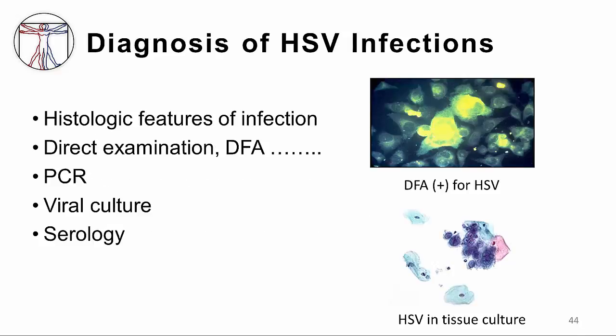The diagnostic approach to herpes infections is summarized on this slide. There are several ways that one can infer or prove that a herpes infection is present. One is that if you have a biopsy of tissue infected with herpes, there may be specific histologic features such as giant cells or intranuclear inclusions, though this is not particularly specific or definitive.